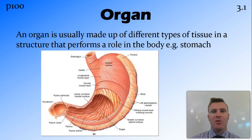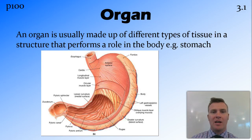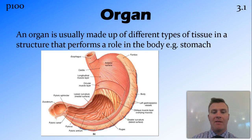Once we get a few different types of tissues together to form a structure, we can form an organ. An organ is made up of different types of tissue that has a job to do in the body. For example, we have the stomach, and the stomach is involved in digestion.